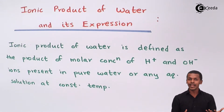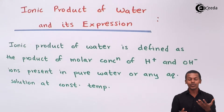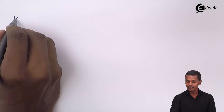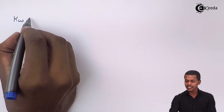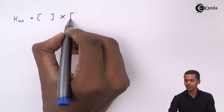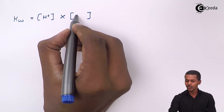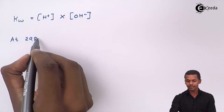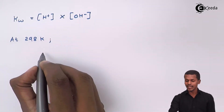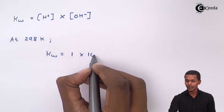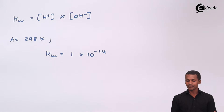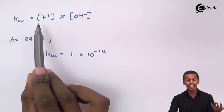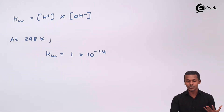Ionic product, as the name itself indicates, is the product of the concentration of H⁺ ions as well as the concentration of OH⁻ ions. That is why it is denoted by the term KW. So KW is nothing but the product of the molar concentration of H⁺ ions and OH⁻ ions. It has been found that at 298 Kelvin the value of KW, the ionic product of water, is 1 × 10⁻¹⁴.